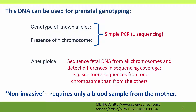Identifying fetal DNA in maternal blood is very valuable because it can be used to genotype the fetus before birth. The simplest case is detecting the gender of the child — all that's needed is polymerase chain reaction amplification of a Y chromosome sequence. If it amplifies, you're having a boy. Another use is to determine the genotype of the fetus for known alleles, which is particularly straightforward if it's an allele that the father has but not the mother.